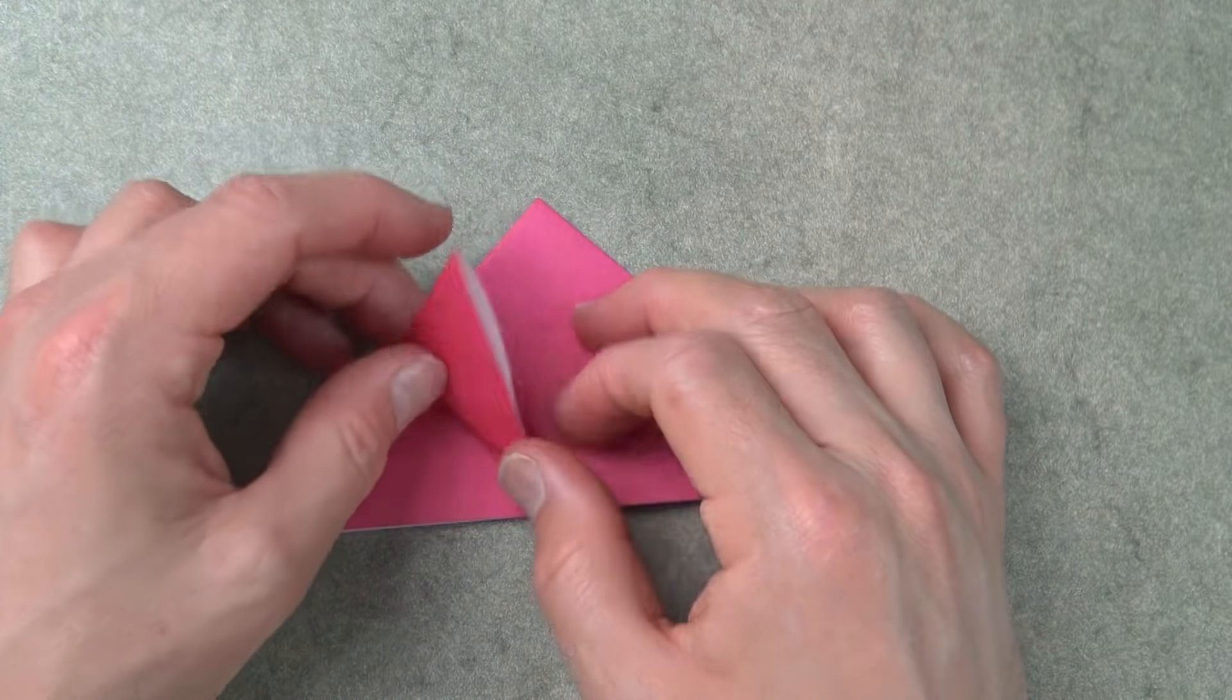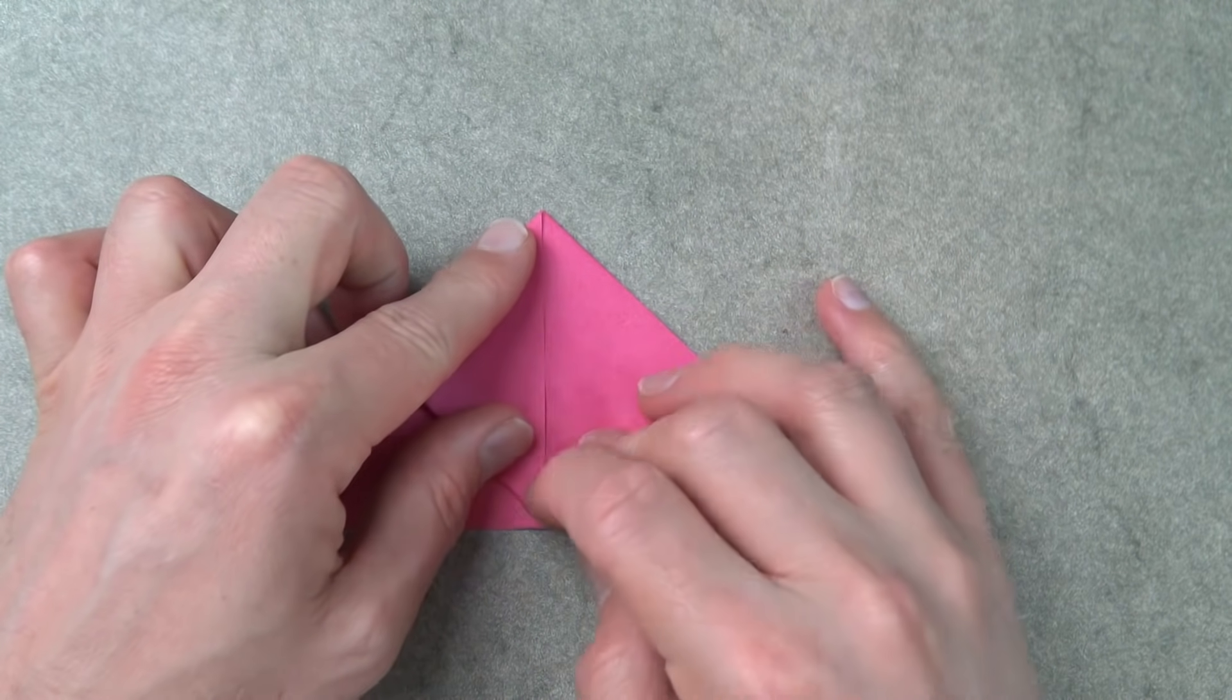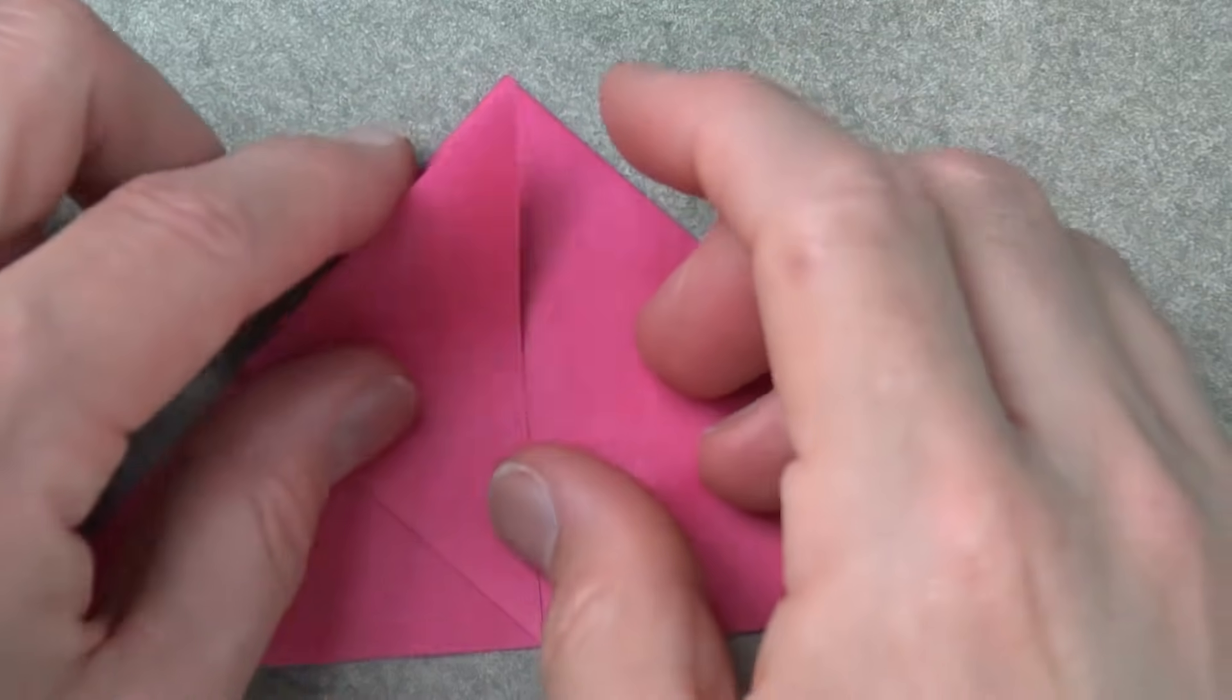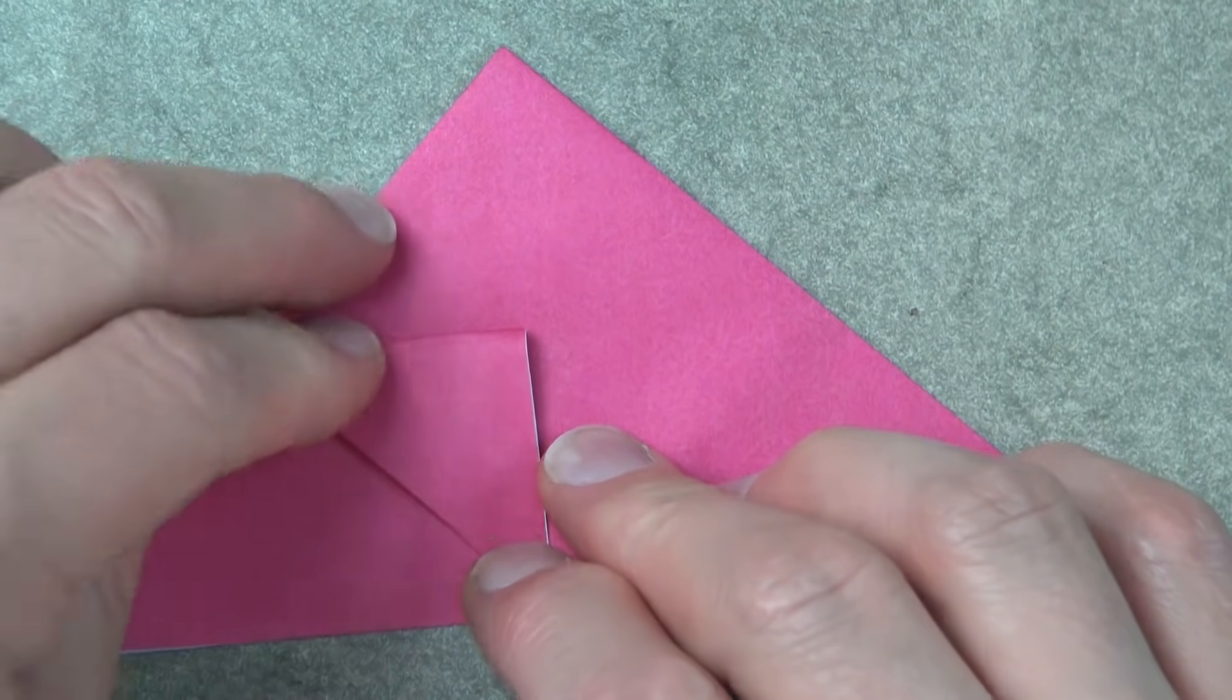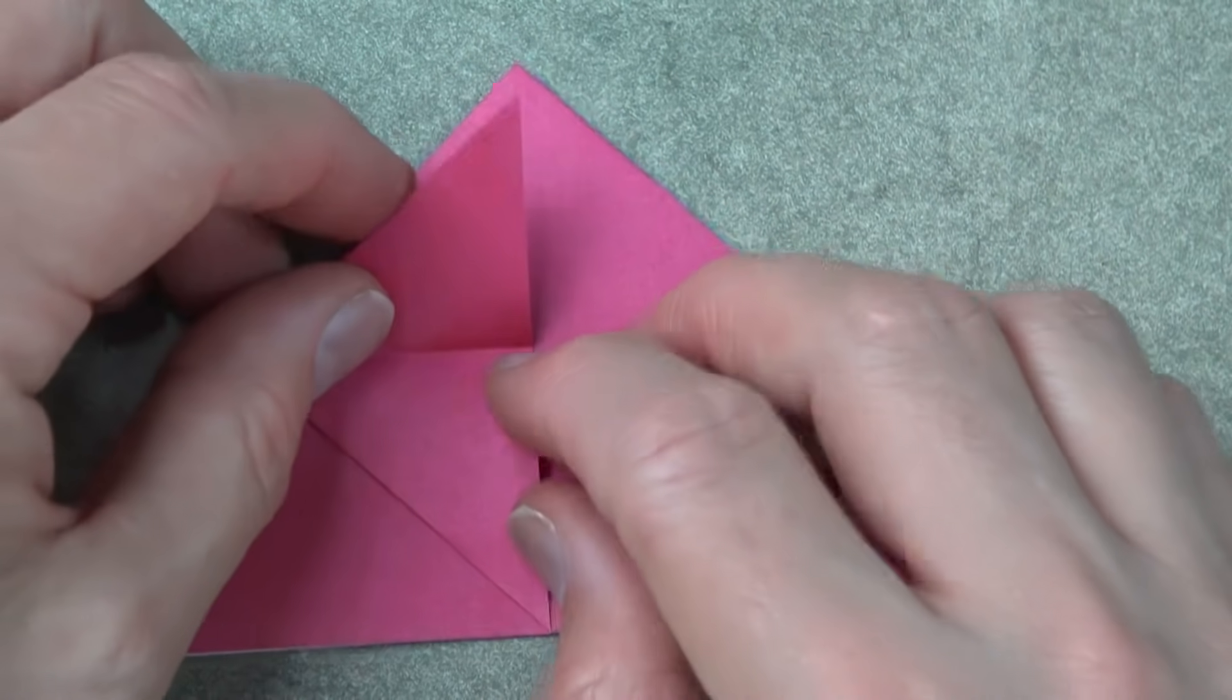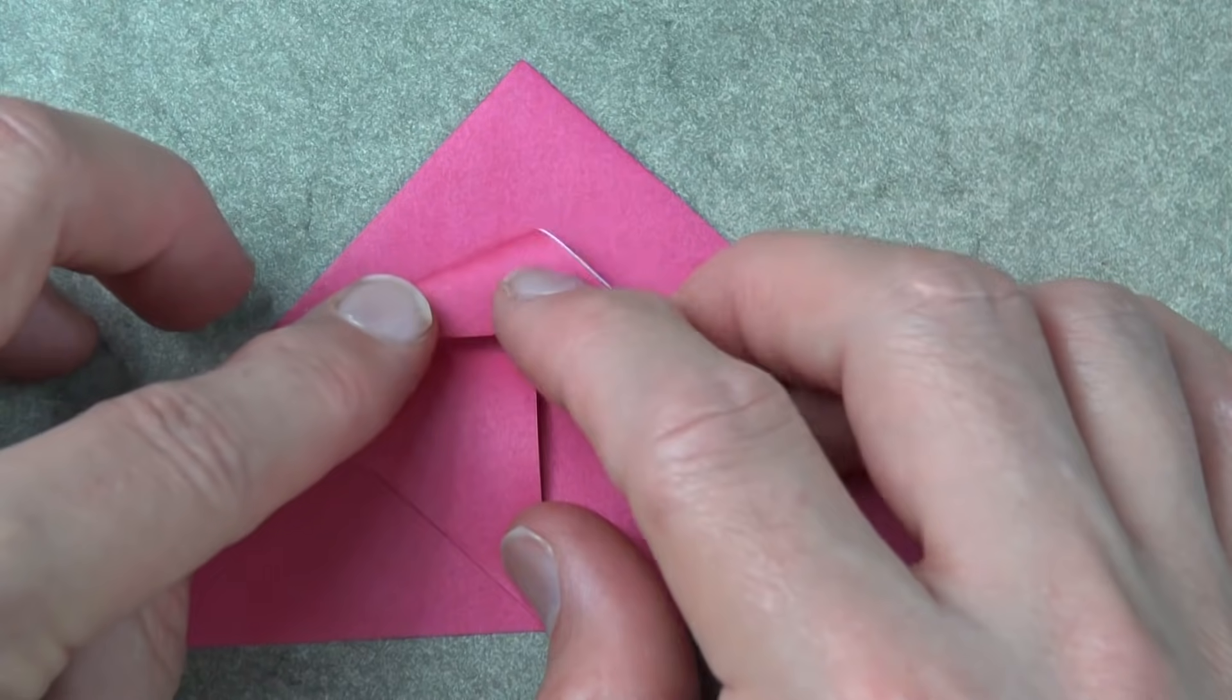Now fold this flap up to the top and fold this flap down to here. Unfold and fold the flap so that this edge aligns with the crease.